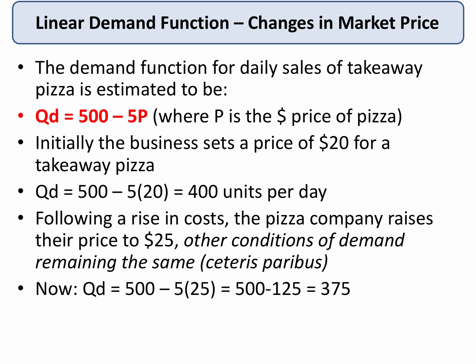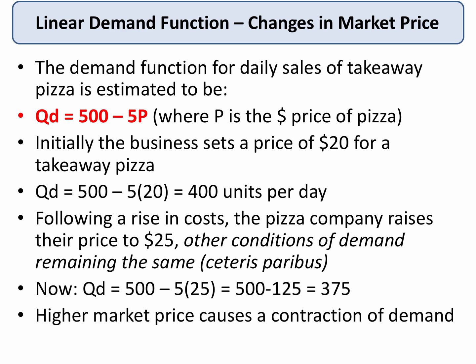You can also work out the elasticity by calculating the percentage change in price — a 25% increase — and the percentage change in demand. We've shown here how a higher market price for pizza causes a contraction of demand, perhaps with people substituting away from pizza towards relatively cheaper products.